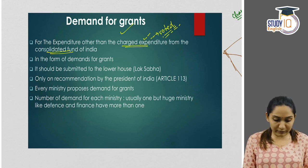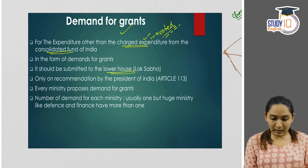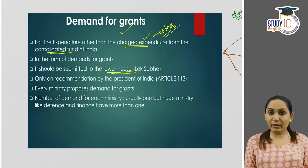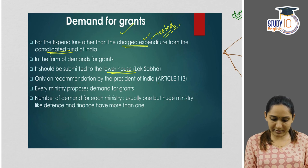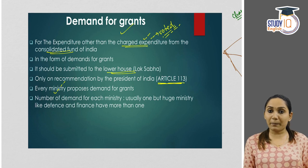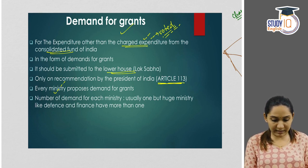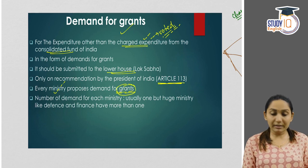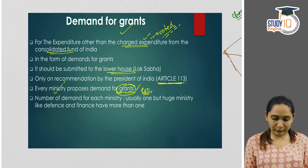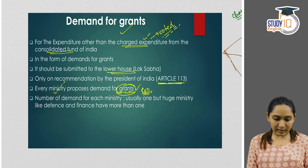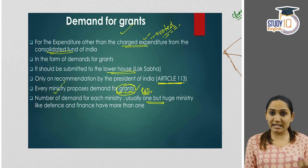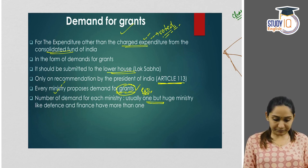Demand for grants should be submitted to the lower house — the Lok Sabha — and can be submitted only on the recommendation of the President of India, according to Article 113 of the Constitution. Every ministry proposes demand for grants because every ministry will have its own expenditure. Each ministry proposes its demand for grants. The number of demands for each ministry is usually one, but large ministries like defense, finance, etc., may have more than one demand.